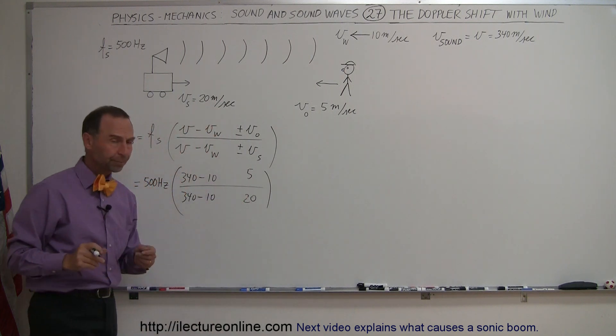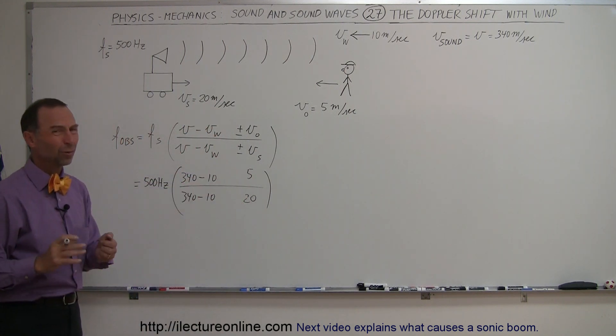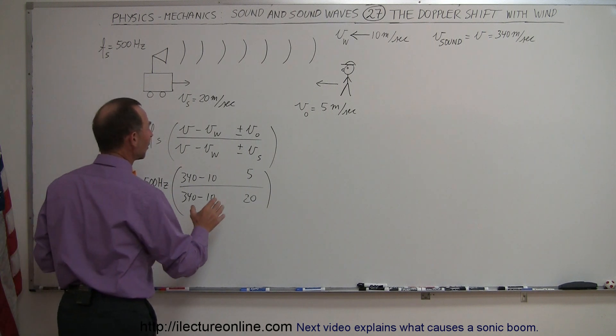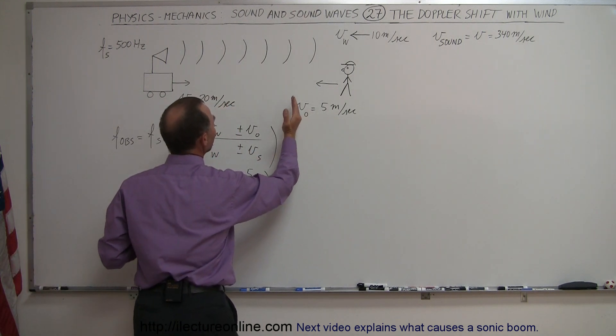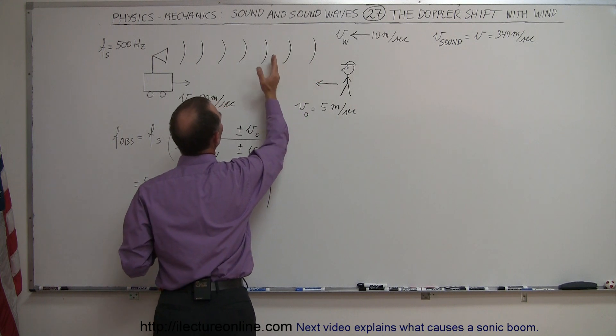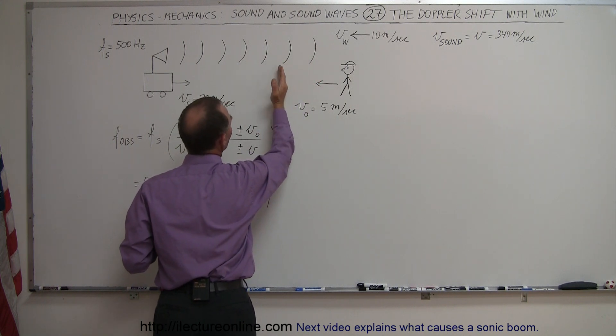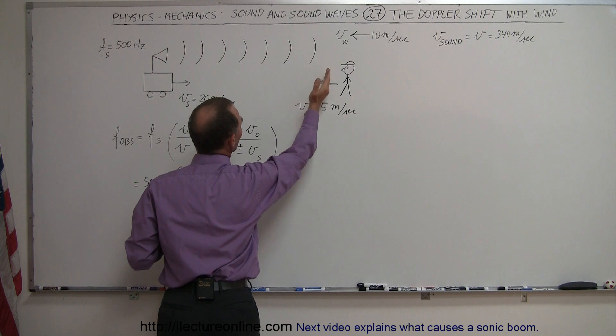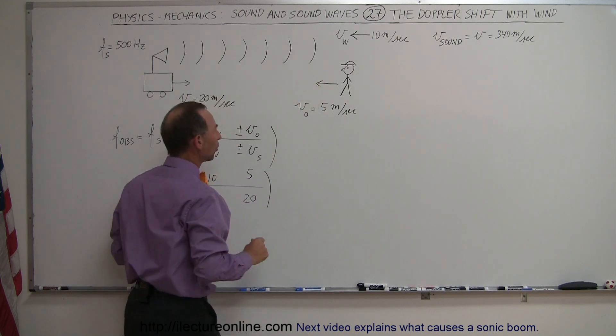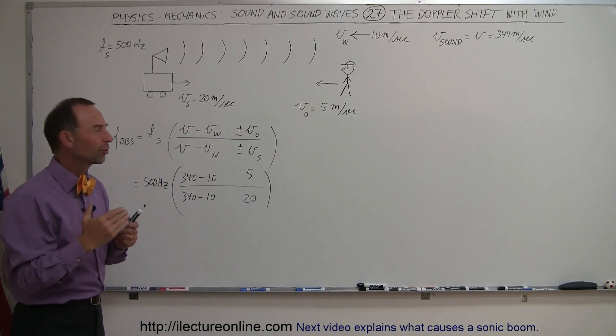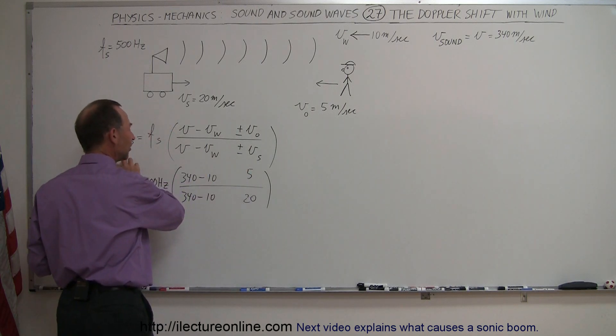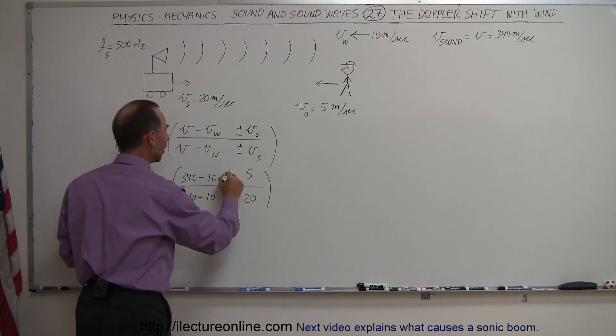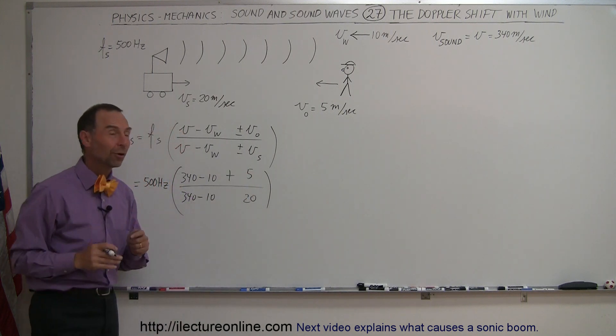The way we do that is by looking at the effect. If the observer is moving towards the source, it has the effect of bringing the waves closer together because they don't take as long for the next wave to get to the observer. This means the observer is going to hear a higher frequency. Since this number is in the numerator, a higher frequency means we have to have a plus there - a bigger number in the numerator to give you a higher frequency.